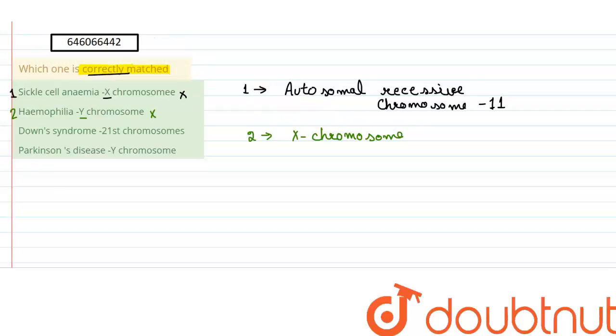Then the third option is Down syndrome, 21st chromosome. This is the right match. Down syndrome is caused by the trisomy of chromosome number 21, that is there is an extra chromosome number 21. So this one is a right match.